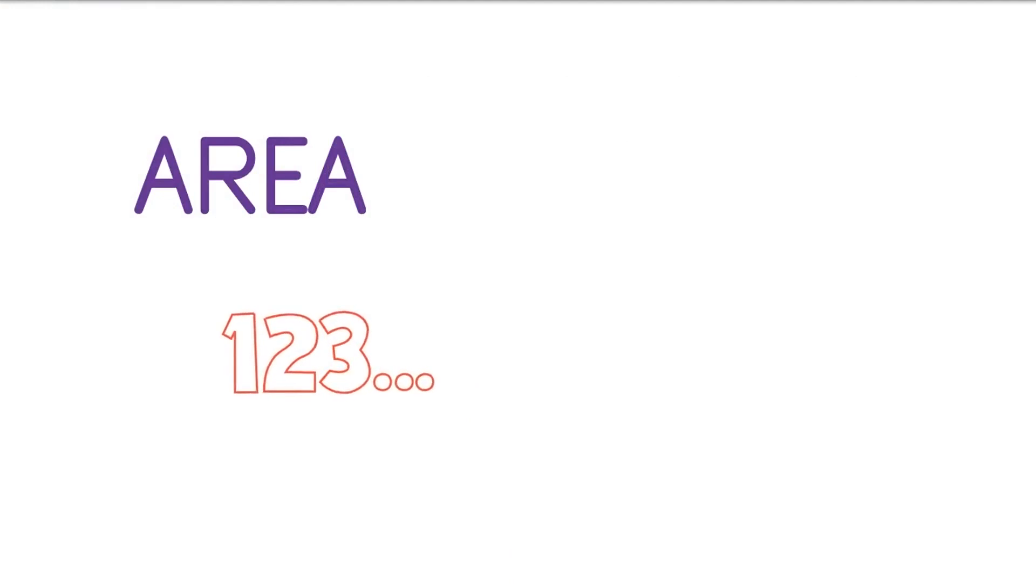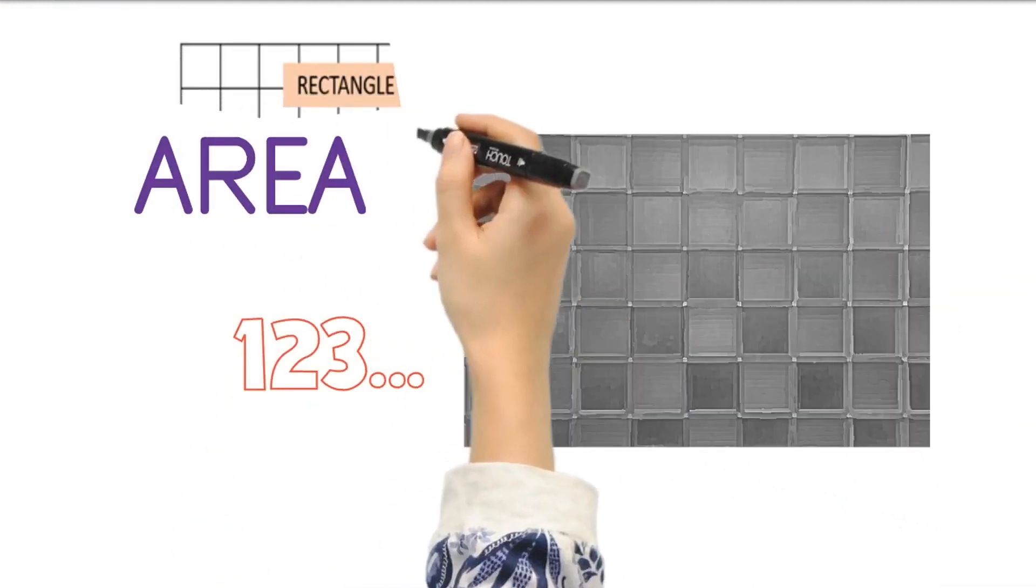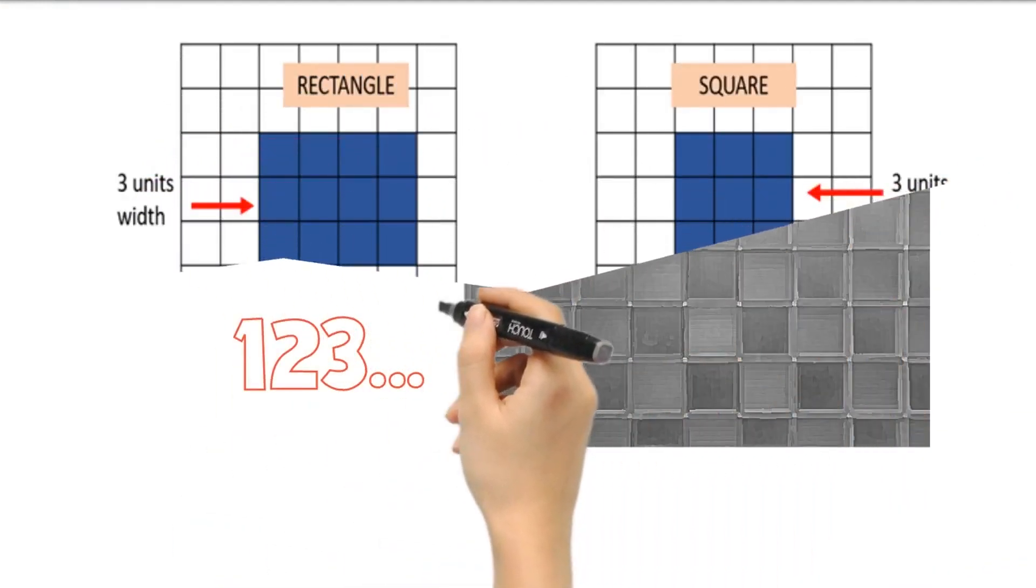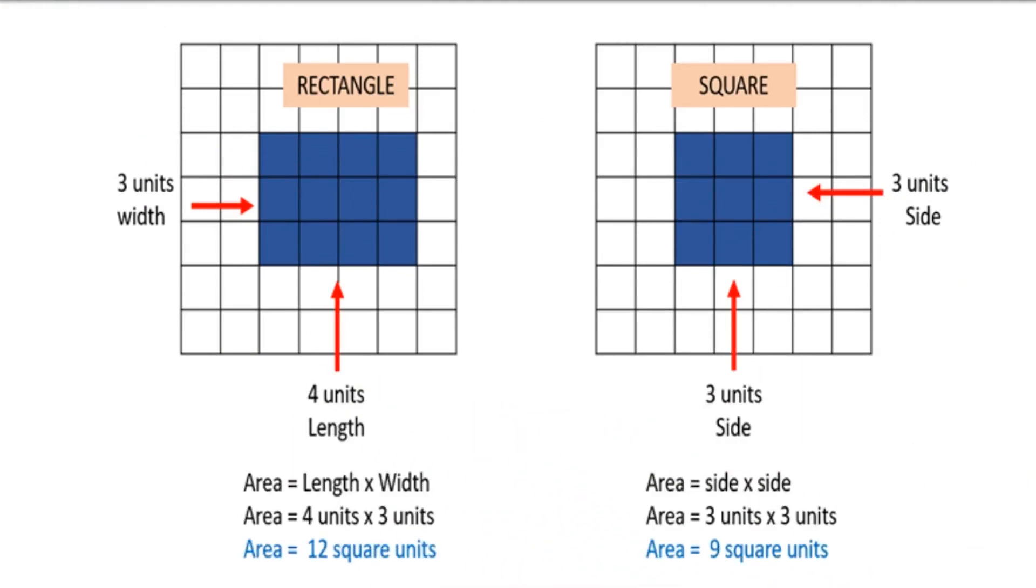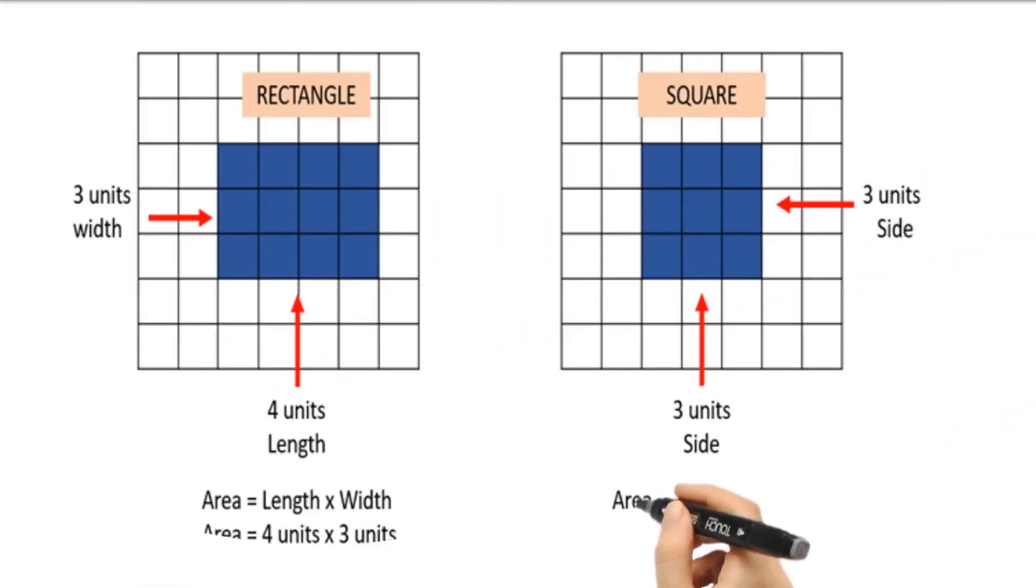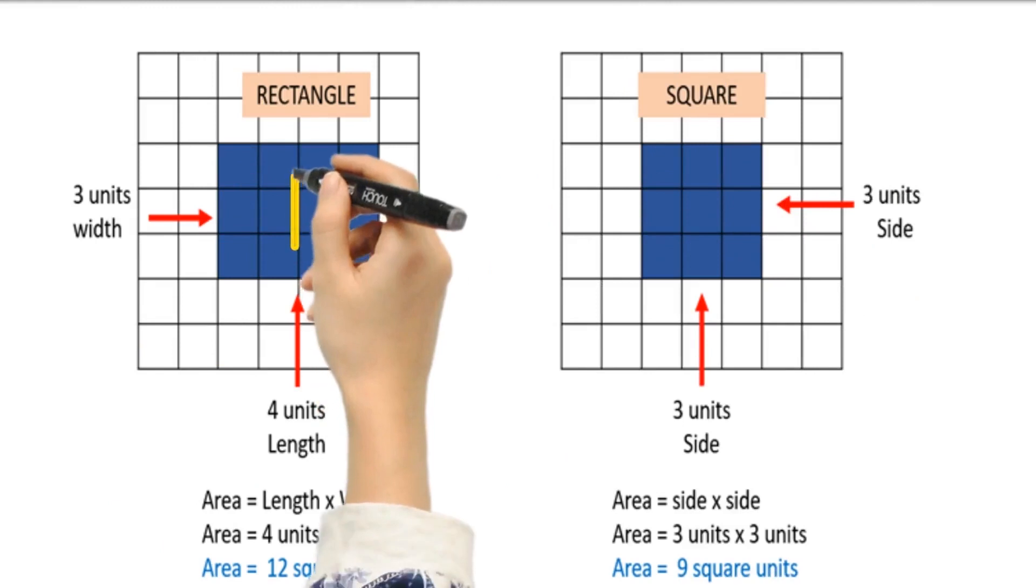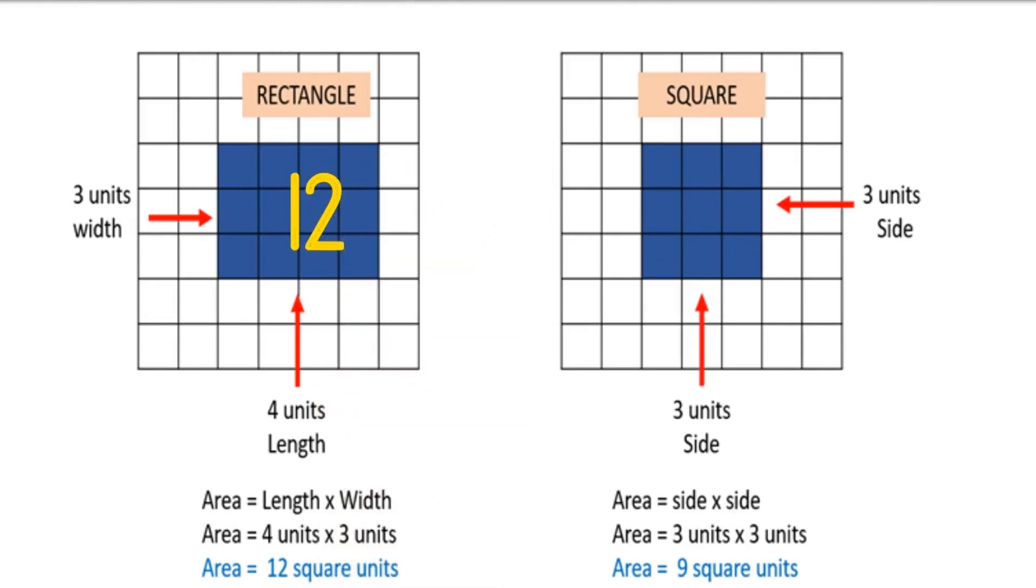Area is the number of square units needed to cover a region. It is very easy, right? Aside from the formula, you can easily find the area by counting all the squares.